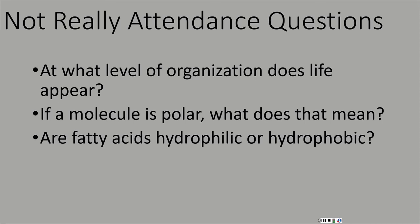Hopefully you've paused the audio and figured out what these are. At what level of organization does life appear? Life appears at the cellular level. Cells are the smallest unit of life. There are things smaller than cells, but they are not considered alive at that point. If a molecule is polar, what does that mean? Polar just means one area of something has different properties than another area of that same something. Such as water — water was polar because one region was slightly positive and one region was slightly negative.